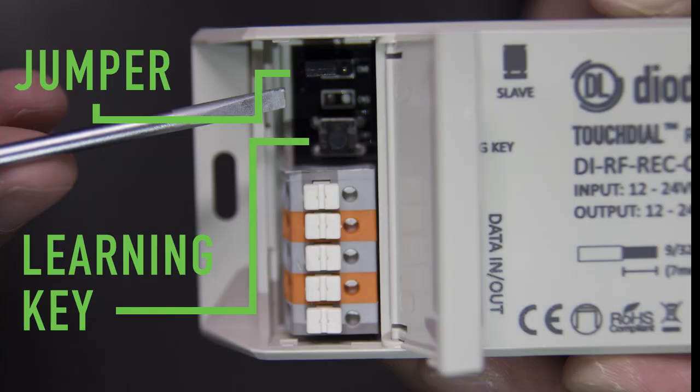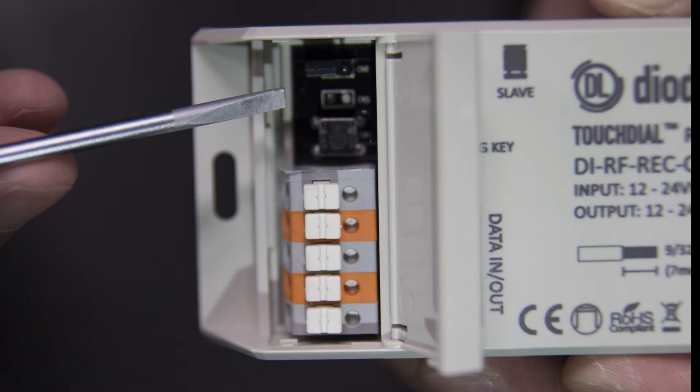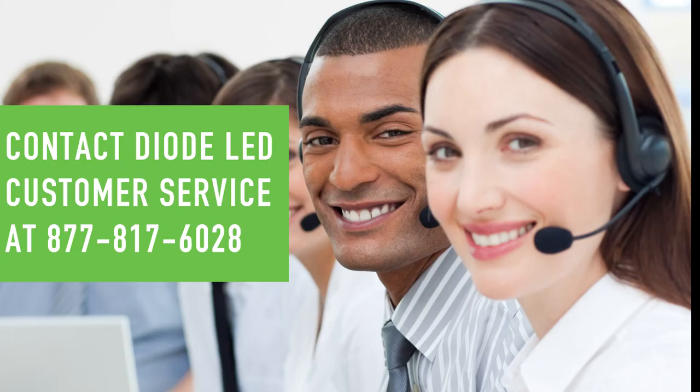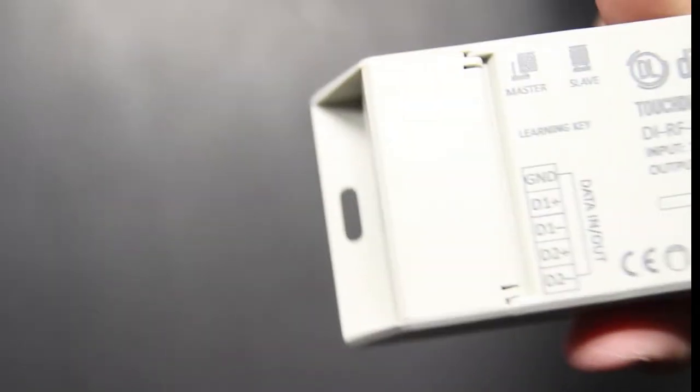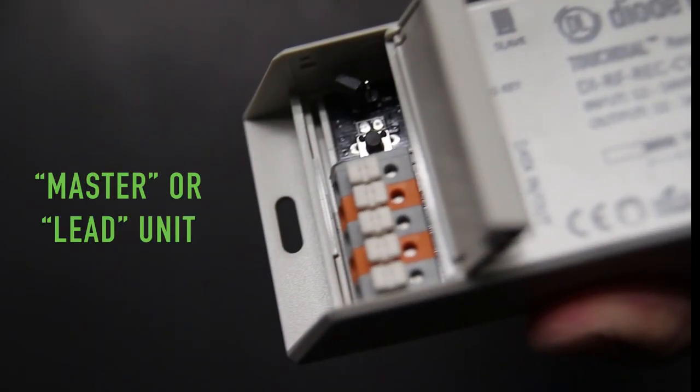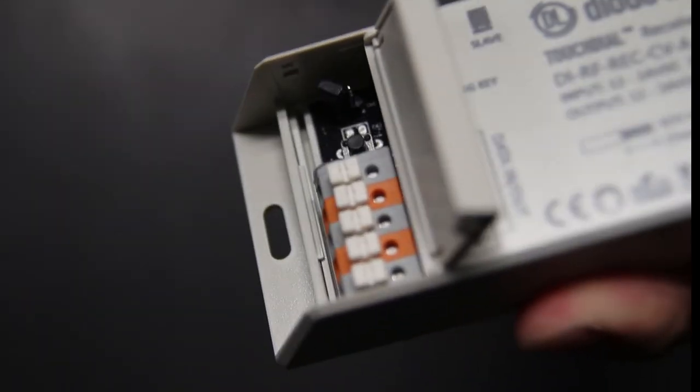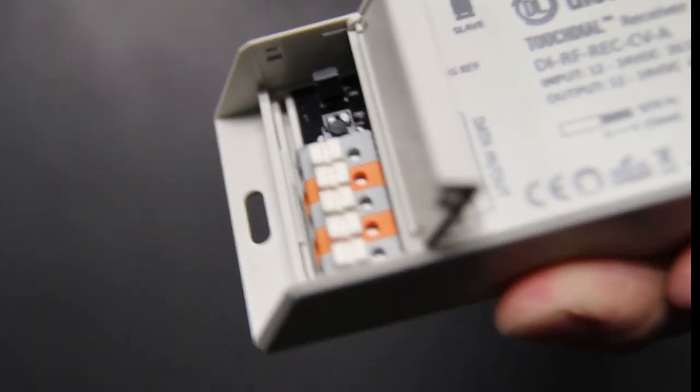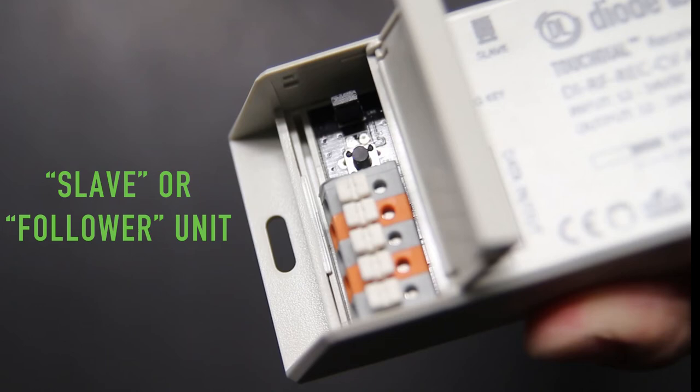The next step is to locate the jumper found just above the learning key. Make sure the jumper pin is on one of the header pins. If it is not, contact Diode LED customer service. By having the jumper located on one header pin, this identifies this particular receiver as a master unit or lead unit. Once confirmed, take another one of the receivers and relocate the jumper to go over both header pins. This identifies the touch dial receiver as a slave or follower unit, following the instructions from the master touch dial receiver once connected through the data cables.